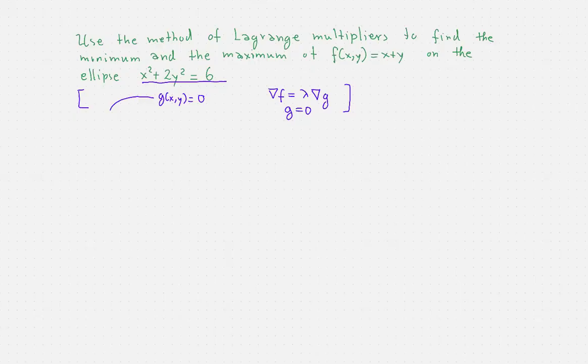So here's what we do. First of all, we define g of x, y. So basically, we bring everything to the left-hand side. So we have x squared plus 2y squared minus 6.